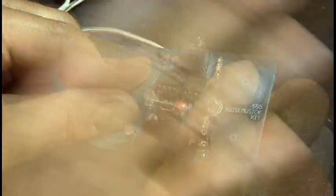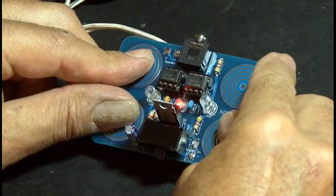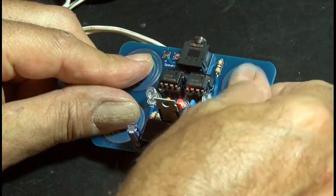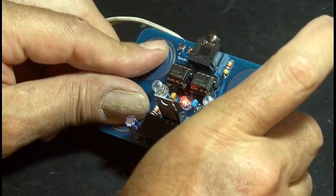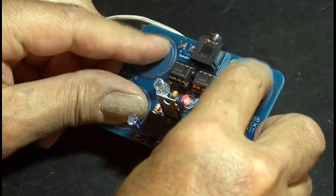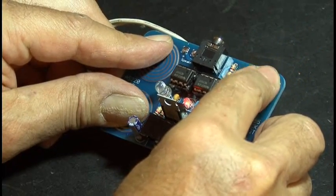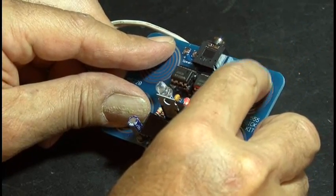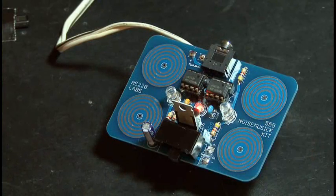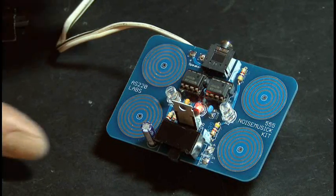The sound is changed by the amount of light that reaches the infrared sensors, and also the natural resistance of your body changes the sound when you touch the four touch points. And that's how to make the 555 noise music kit. We'll see you next week with another weekend project.